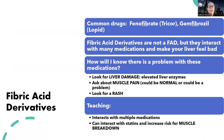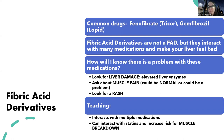The next medication is FADs - fibric acid derivatives. These look exactly like statins: they can cause liver problems, patients need to report muscle pain, and they need to look for rash. The only other thing to know is that FADs interact with a lot of other medications, so be careful with medication interactions. If someone is on a FAD and a statin together, it can actually increase the risk of rhabdomyolysis or muscle breakdown. You really don't want to give these with statins as it significantly increases the risk for problems.